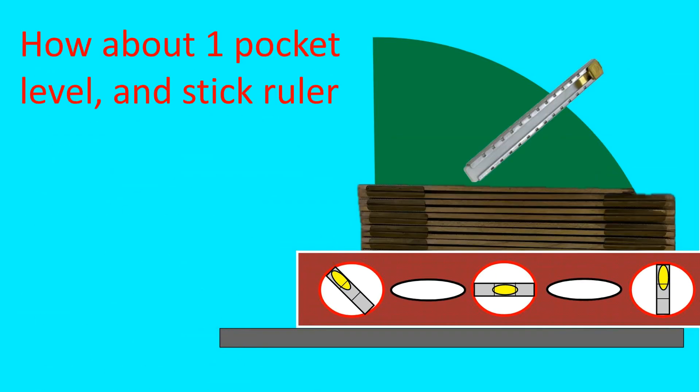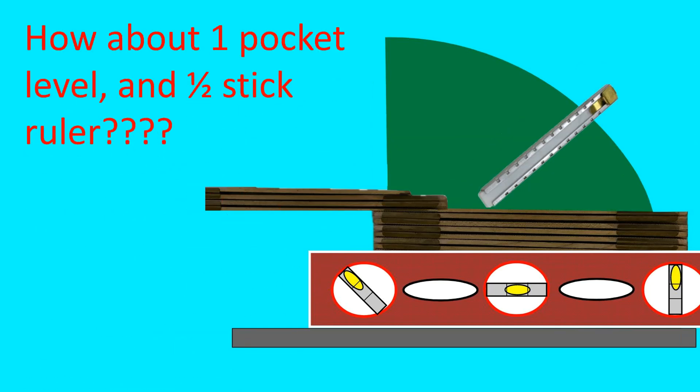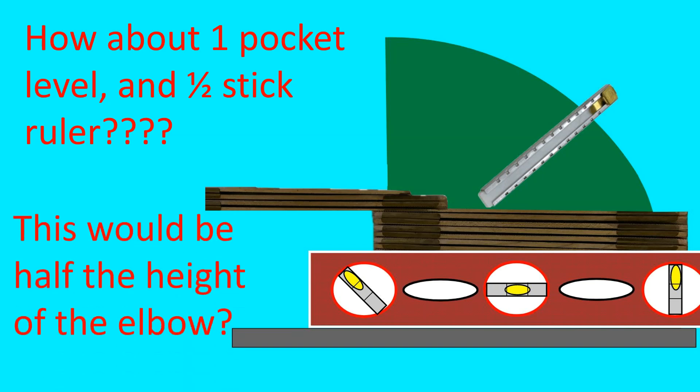We can also use a pocket level and a stick roll. Could this be half the height of the elbow? How about one pocket level and open the stick roll up. So you need to improvise a little bit. This would be half the height of the elbow.